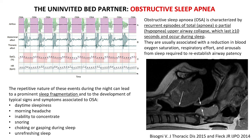This sleep-disordered breathing can be caused by obstruction in the airway, which is represented in this MRI on your right hand side. As you can see, the most prominent muscle — the genioglossus muscles of the tongue — tends to collapse backwards, causing obstruction at night. This is one of the possible causes of sleep-disordered breathing, and certainly the most common.